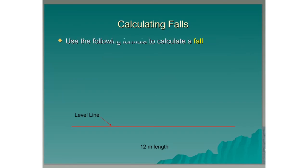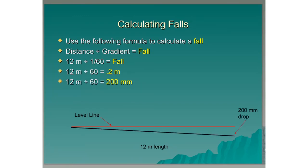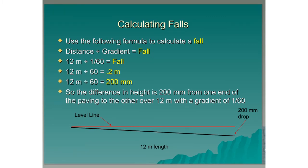Calculating falls. Use the following formula to calculate a fall: distance divided by the gradient is equal to the fall. For example, the distance is 12 meters and the gradient is 1 in 60. So 12 meters divided by 60 is equal to 0.2 meters. We can see that over a distance of 12 meters with a fall of 1 in 60, the drop is 200 millimeters. So the difference in height is 200 millimeters from one end of the paving to the other over 12 meters with a gradient of 1 in 60.